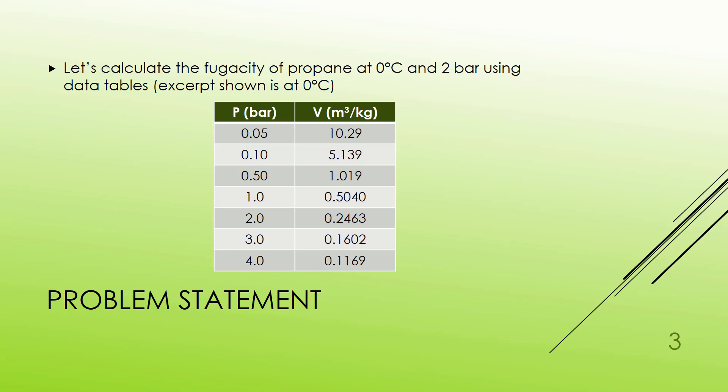Let's look at propane. I have data tables for propane at 0 degrees C and 2 bar. If I look for 0 degrees C, these are all the pressures the data was available, and these are the specific volumes.